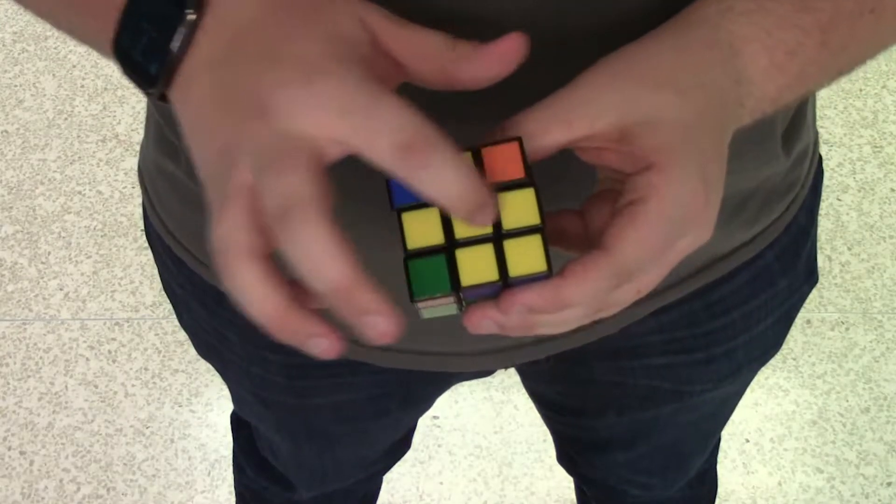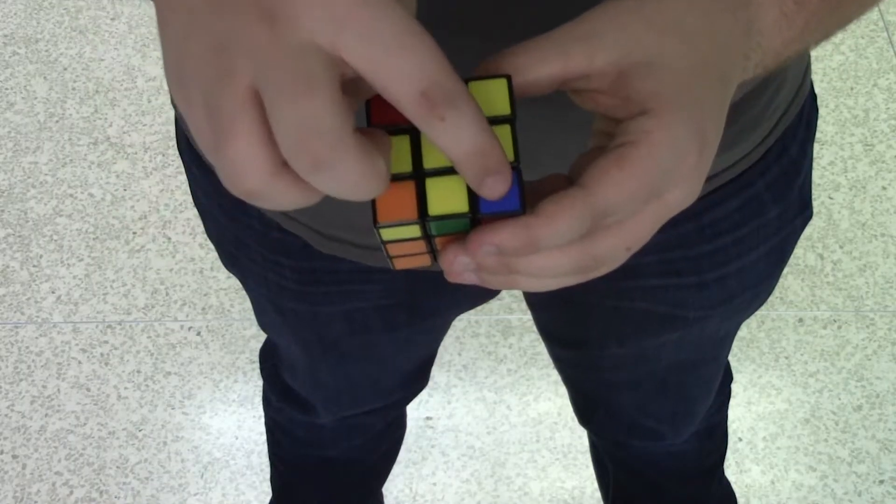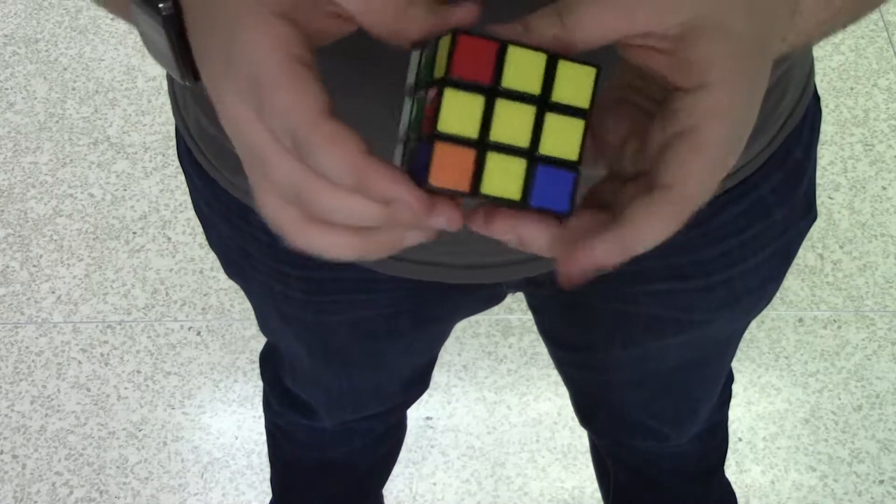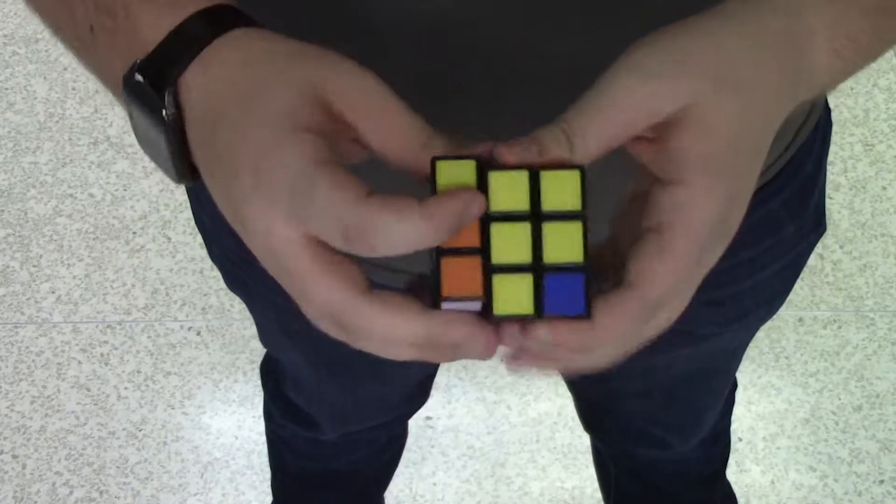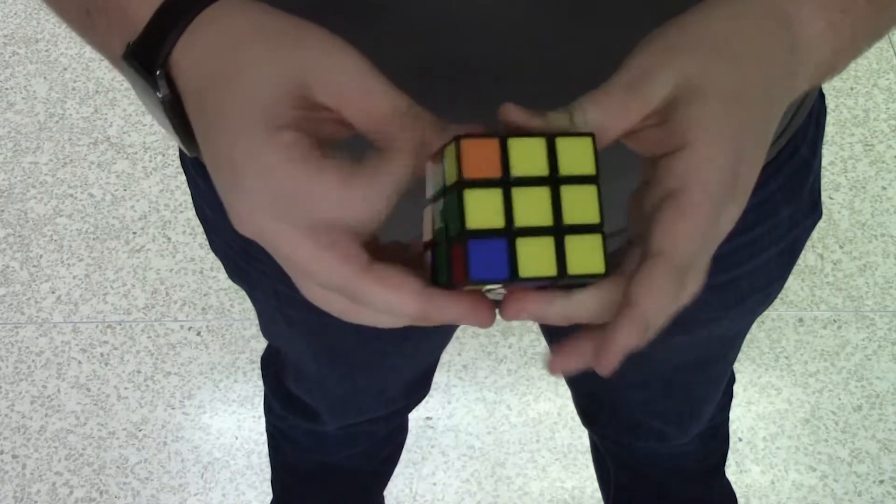Okay, so the fifth step is solving the corners of the layer you just did the cross on. It is done with exactly the same step as when you solve the corners in the second step, so there's nothing else to learn here.